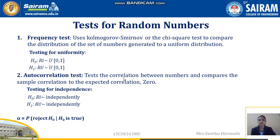The autocorrelation test tests the correlation between the numbers and compares the sample correlation to the expected correlation of 0. The expected correlation is always 0 because no relationship should exist between the numbers. We obtain the correlation value for all the numbers generated and compare it with 0. This correlation value should be as small as possible for the hypothesis to be accepted.